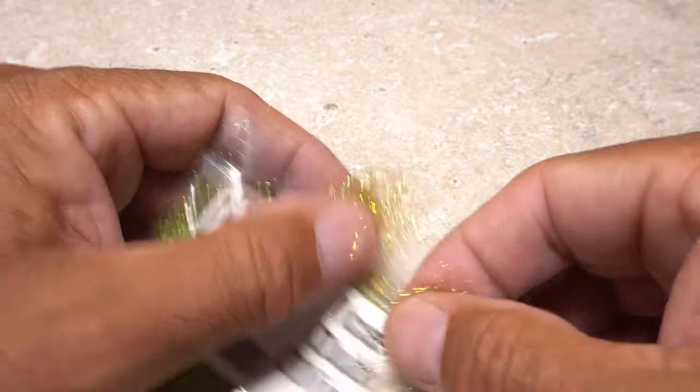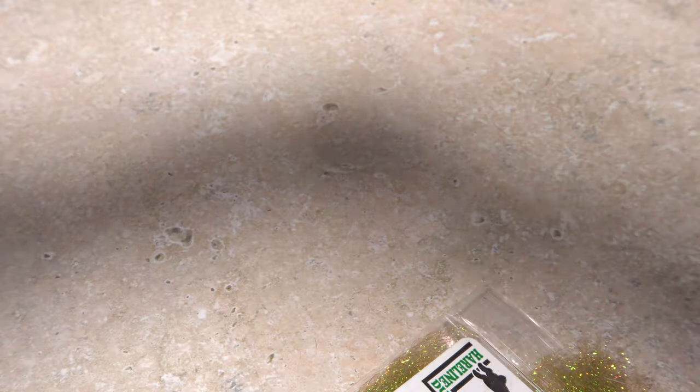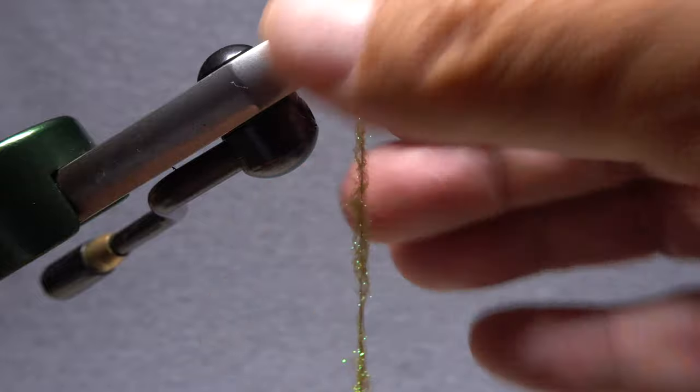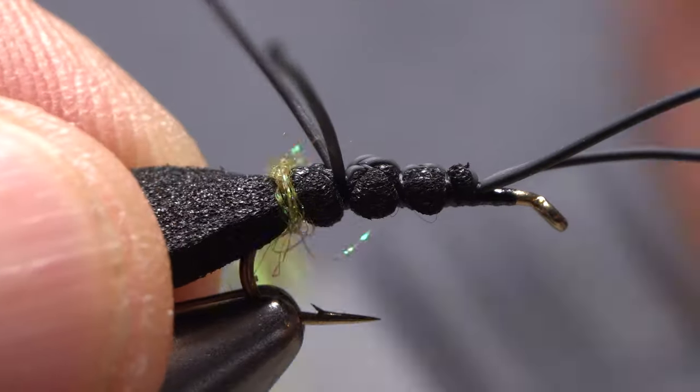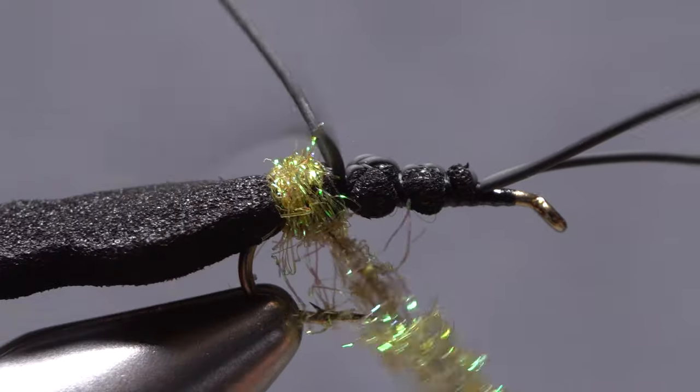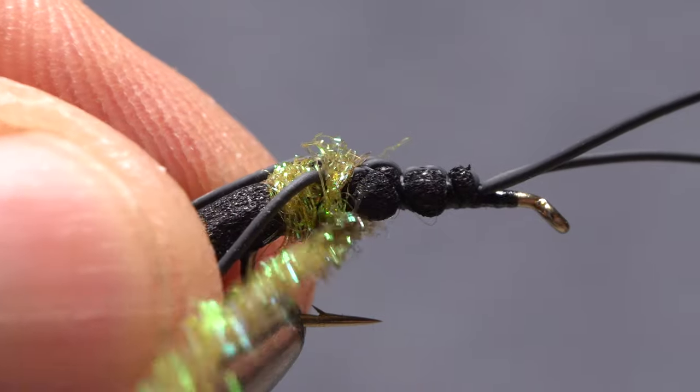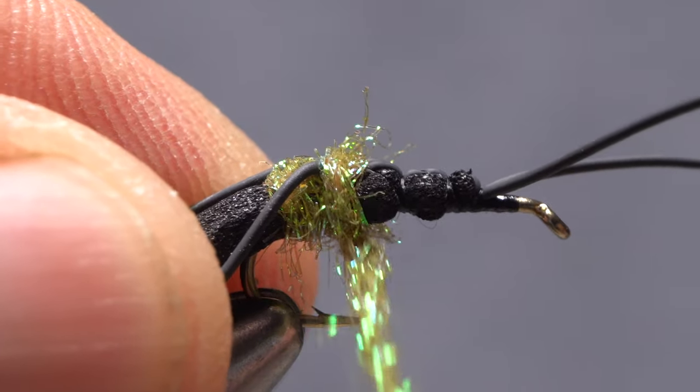Pluck an ample amount of olive ice stub free from the packet and use it to create a three inch long dubbing noodle on your tying thread. Start taking wraps with the noodle to cover up the foam segment behind the rubber legs then pull the legs back and take wraps with the noodle in front of them to hold them back.